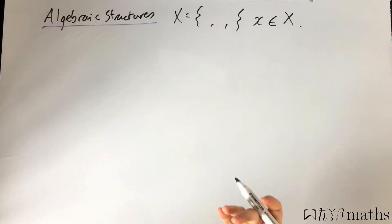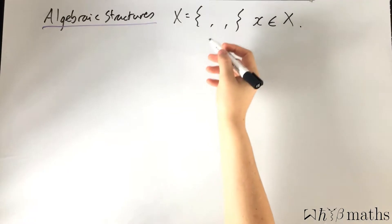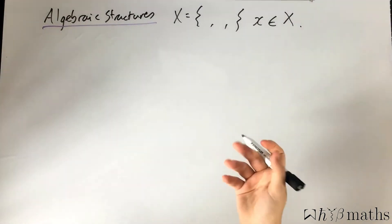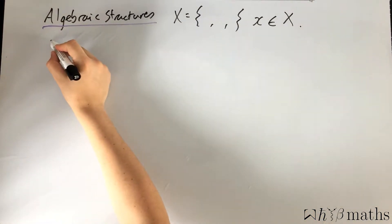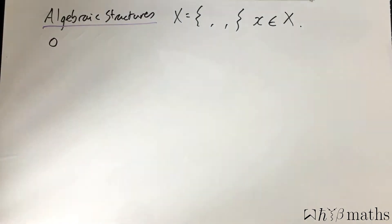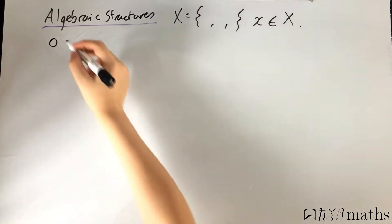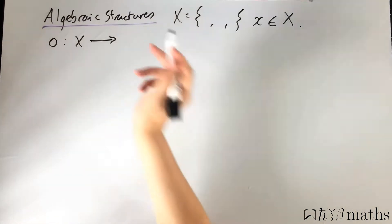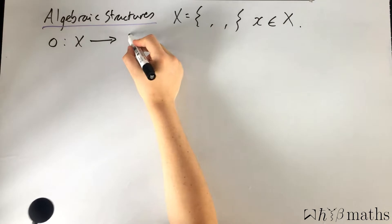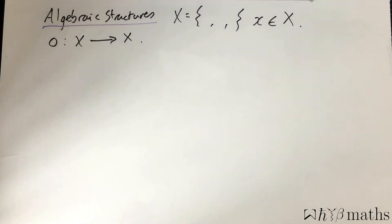What we can do now is give this set additional structure by defining what is known as an operation that we can perform on the elements of that set. I'm going to call this operation circle. It's a map from the set, and it could be into another set, but I'm just going to let it go into the same set.